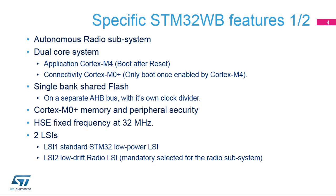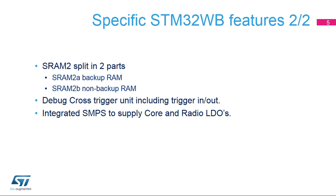A Cortex-M0+ with dedicated memory — flash, SRAM-2 — and peripheral security. It features a single-frequency HSE at 32 MHz, and two LSIs: the standard STM32 low-power LSI-1, and a low-drift LSI-2 to be used when the wireless connectivity is active. These are additional specific features versus other STM32 microcontrollers.